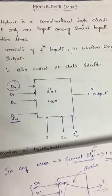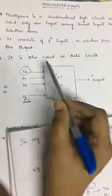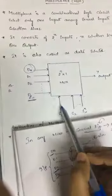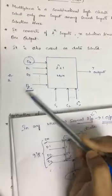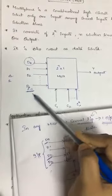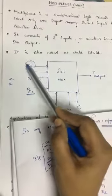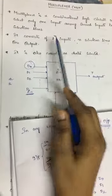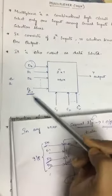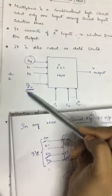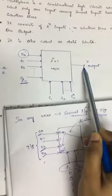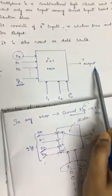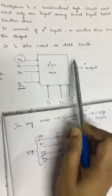A multiplexer is represented with a rectangular box, having inputs, selection lines, and a single final output. The inputs go from d-naught to d-(2^n minus 1), meaning there are 2^n inputs total, n number of selection lines from s1 to s^n, and only a single output. This is why the multiplexer is called a 2^n by 1 MUX.